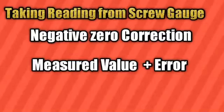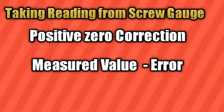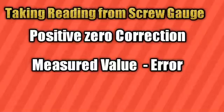If there was a negative zero error, we add this error to the measured value to get the accurate value. If the error was positive, subtract this error from the measured value.